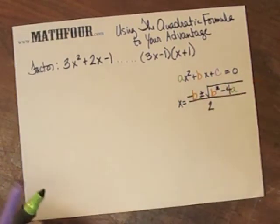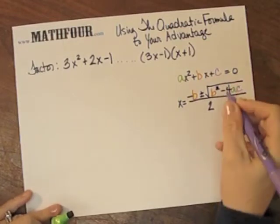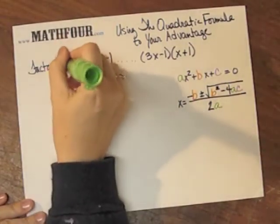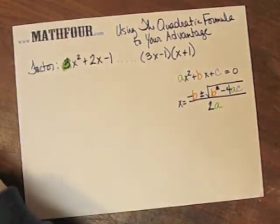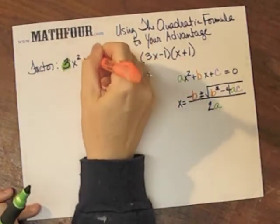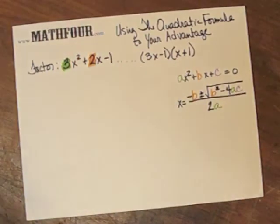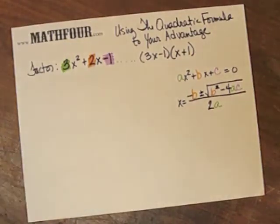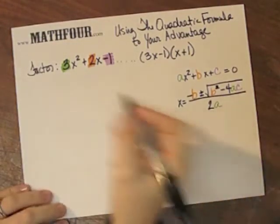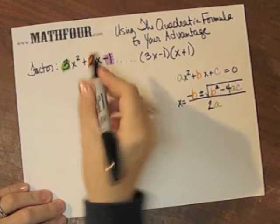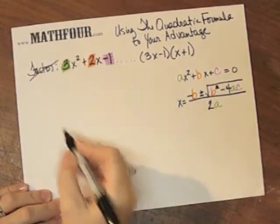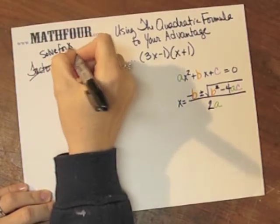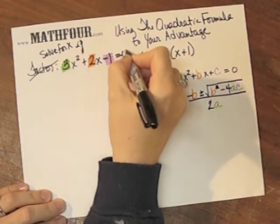I use these colors so that I can identify the coefficients. This value is a, this value is b, and this value is c. Don't forget the negative piece. So instead of factoring, I'm going to replace this and say: solve for x if this equals 0.